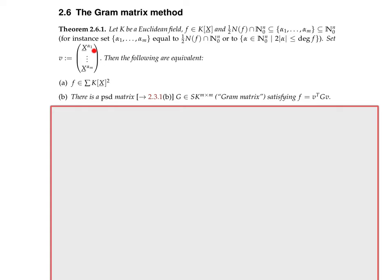If f is a sum of squares of polynomials, there exists a PSD matrix — a so-called Gram matrix — a symmetric matrix over Euclidean field k of some size m, such that f equals v-transpose times G times v, where v is a column vector of monomials. The alpha_i's are tuples of non-negative integers. One choice is to take all tuples such that two times the degree of the tuple is less than or equal to the degree of f.